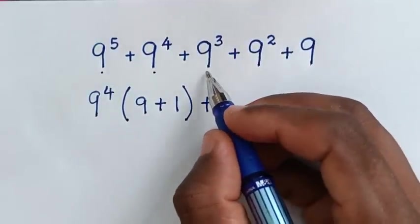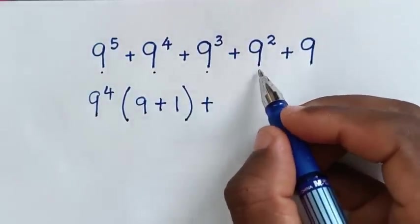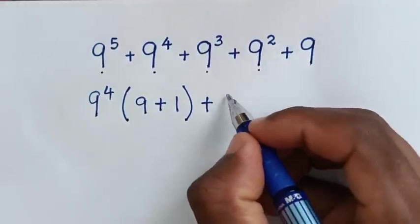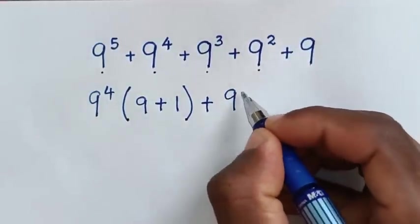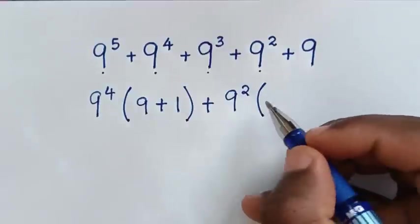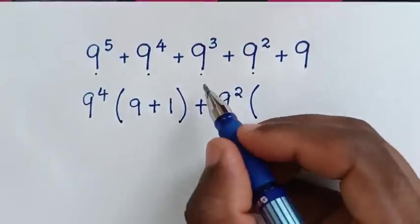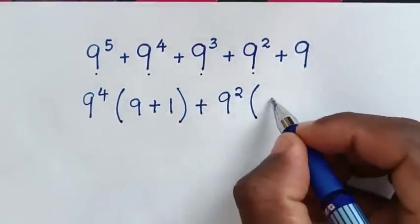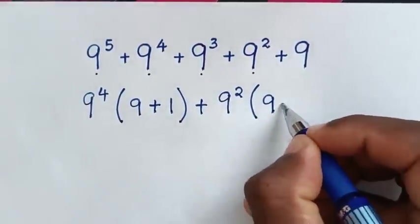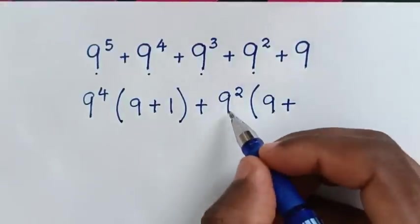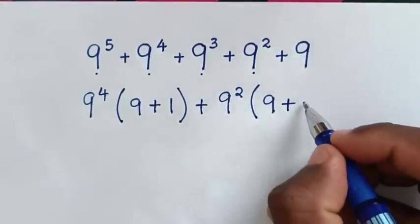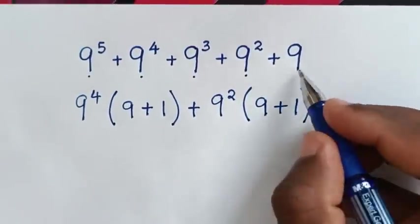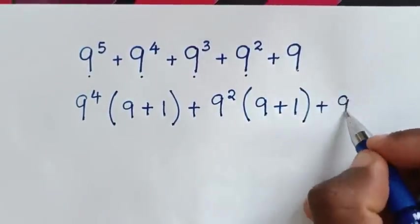Then plus, into here 9 power 3 plus 9 power 2, this 9 power 2 is common, so we'll take 9 power 2 out of the bracket. Then 9 power 3 divided by 9 power 2 is 9, then plus 9 power 2 divided by 9 power 2 is 1, bracket, then plus this 9.